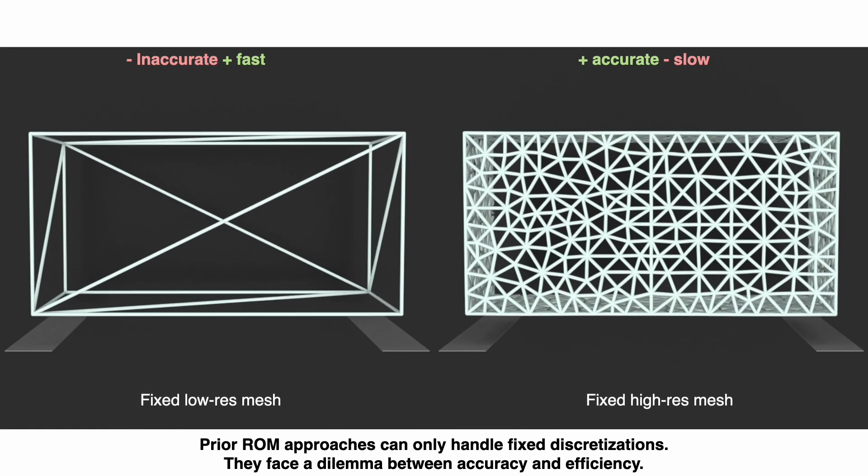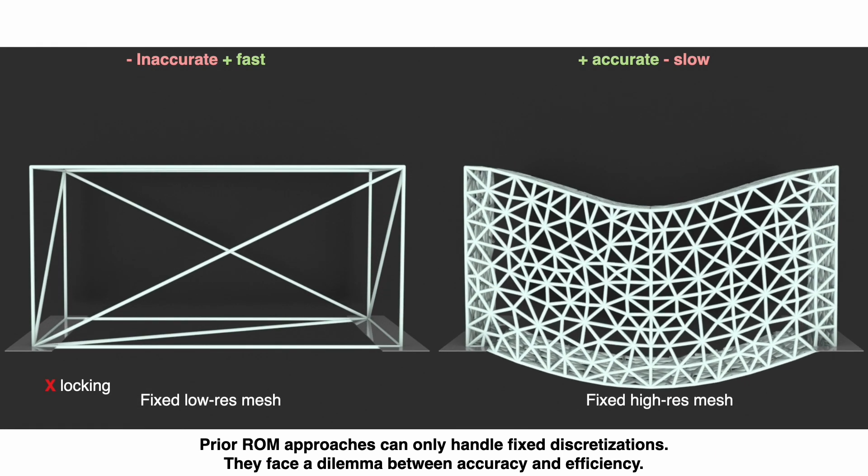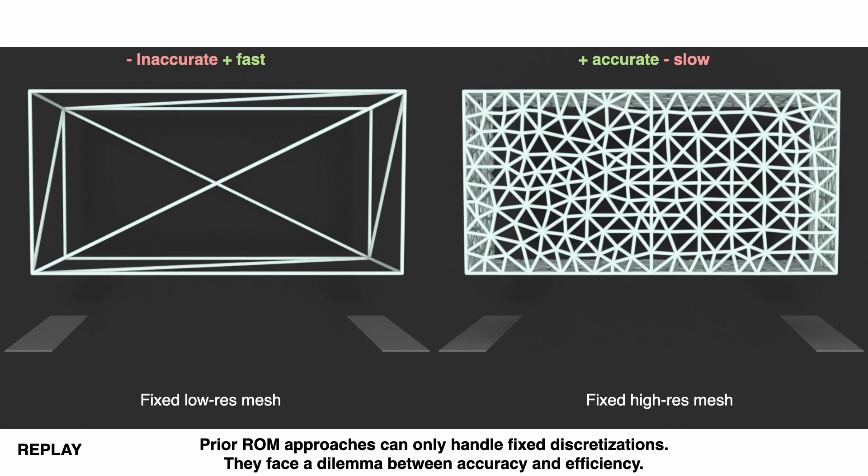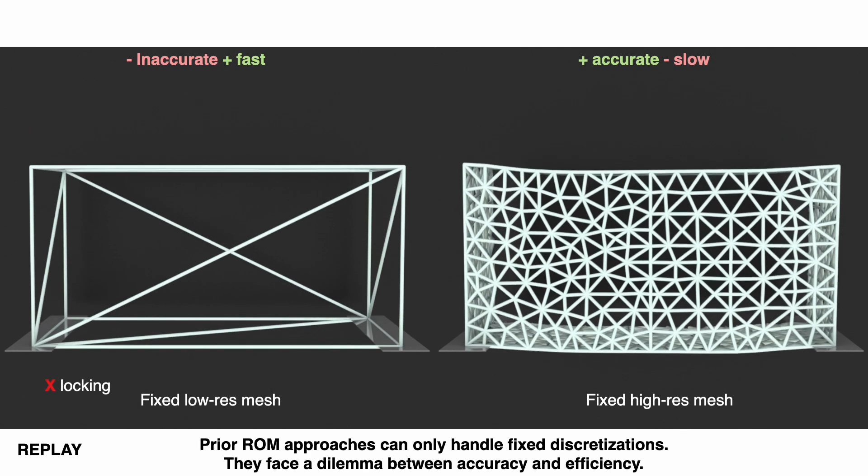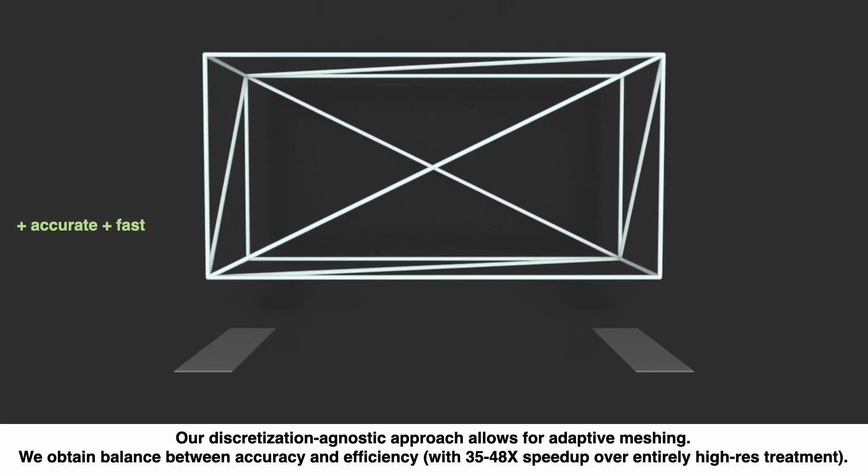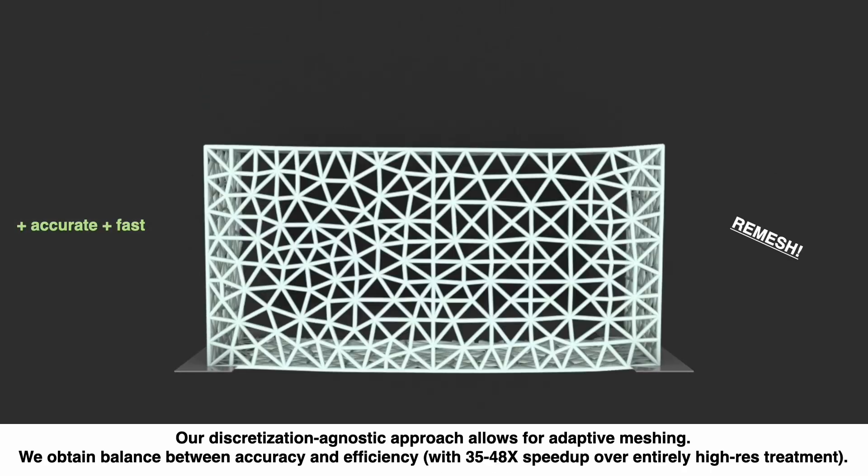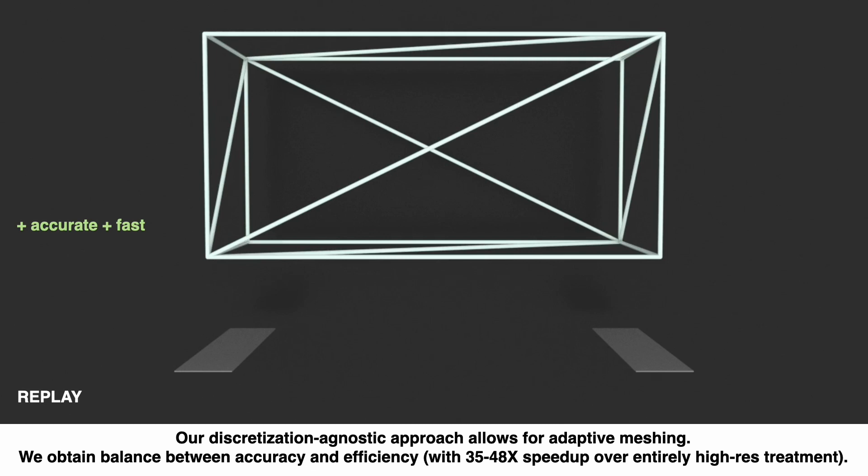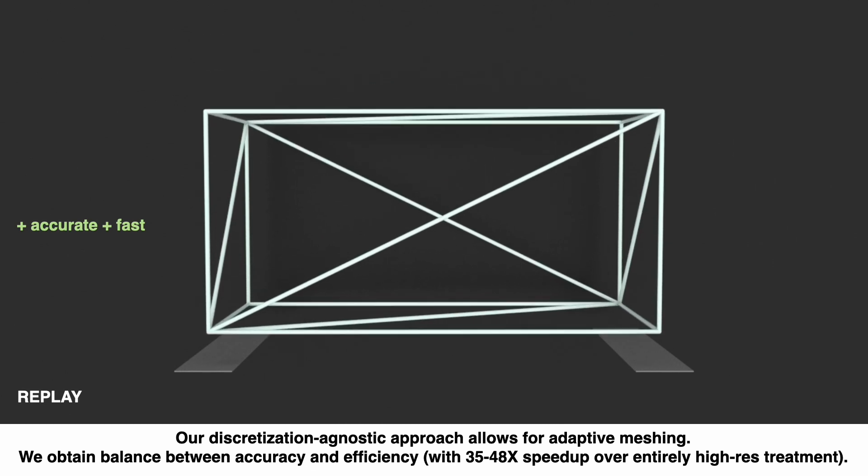When prior reduced-order modeling approaches are constrained to fixed discretizations, they face a dilemma between accuracy and efficiency. Our discretization agnostic approach allows for adaptive remeshing. We obtain balance between accuracy and efficiency, with 35 to 48 times speed-up over the entirely high-res treatment.